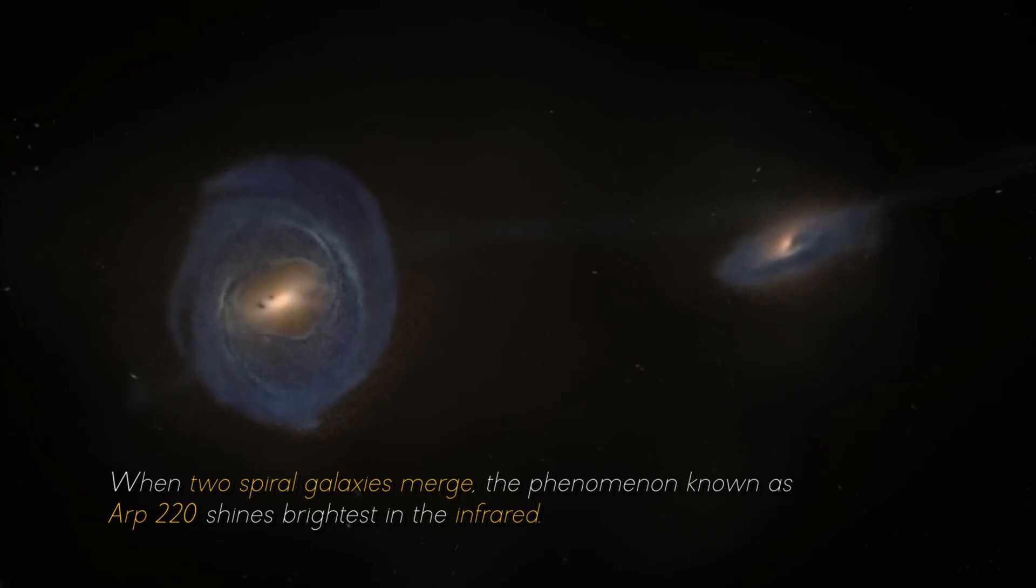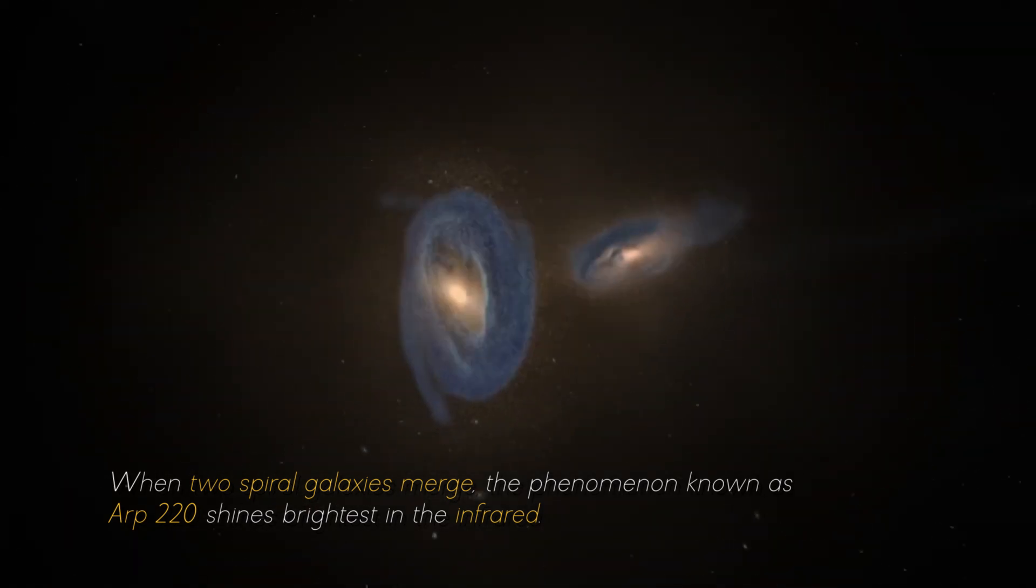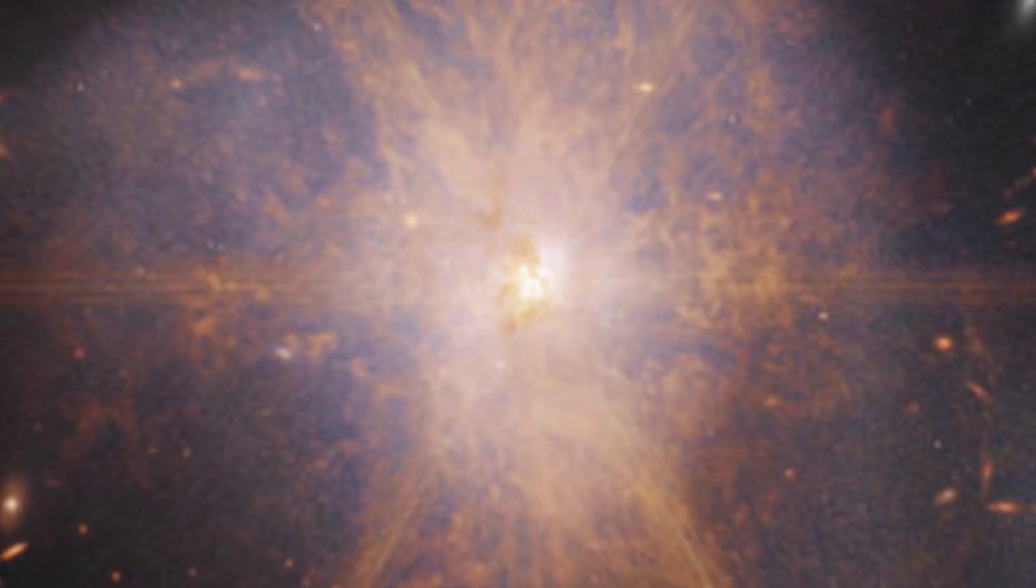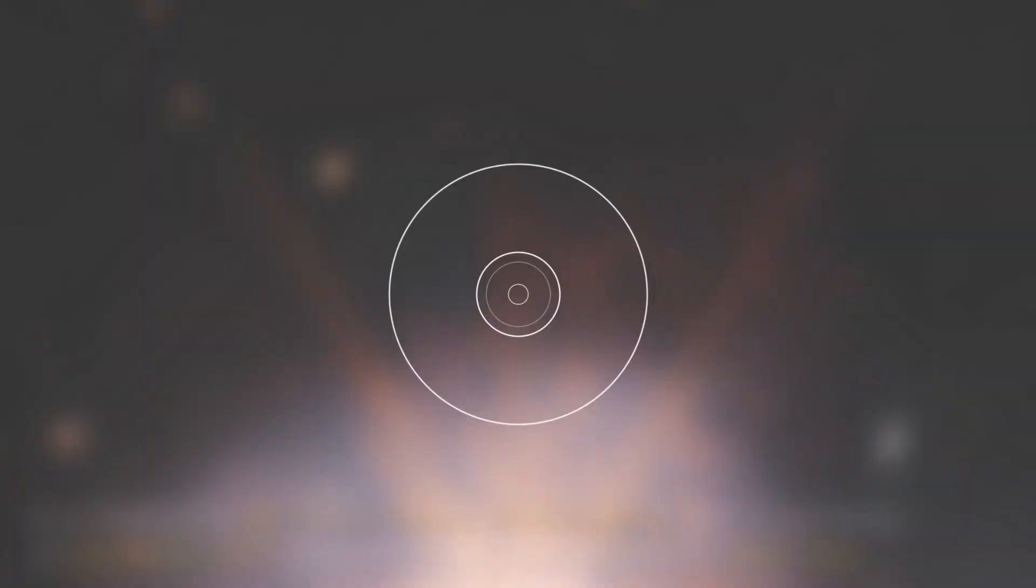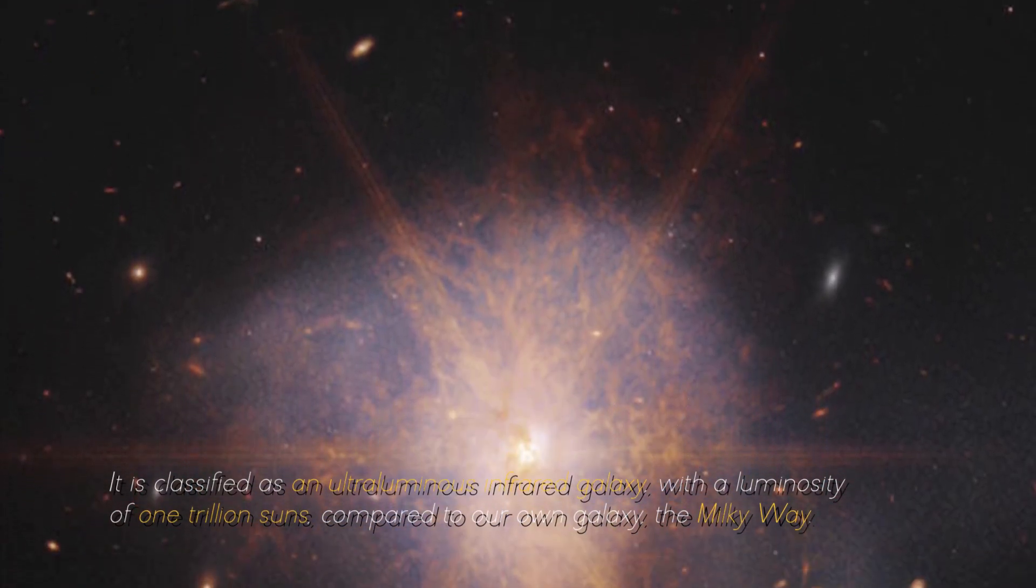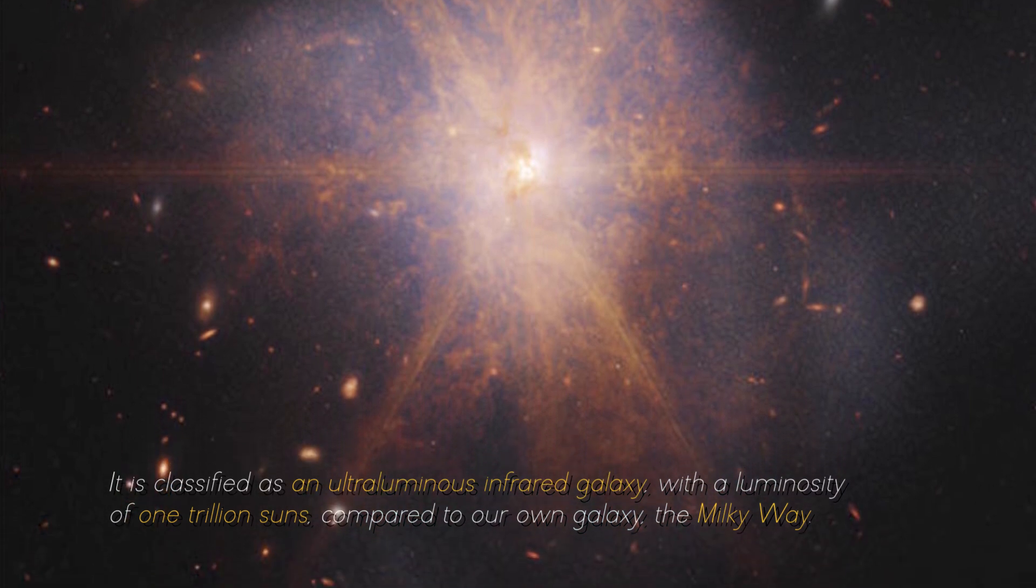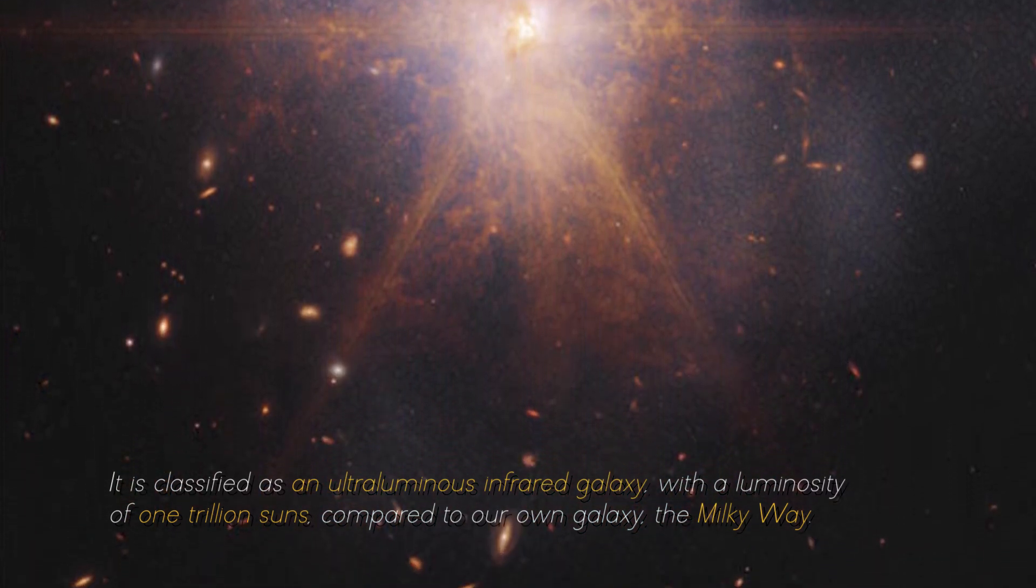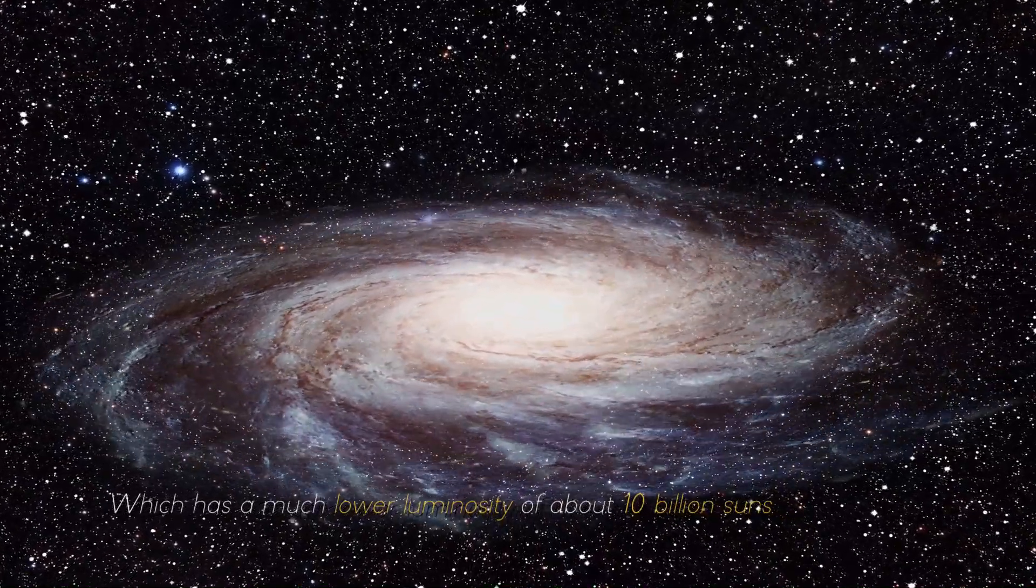When two spiral galaxies merge, the phenomenon known as ARP 220 shines the brightest in the infrared, making it perfect for observation by the James Webb Space Telescope. It is classified as an ultra-luminous infrared galaxy, with a luminosity of 1 trillion suns compared to our own galaxy, the Milky Way, which has a much lower luminosity of about 10 billion suns.